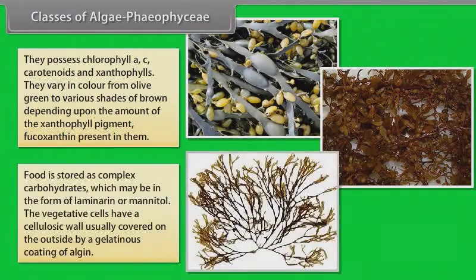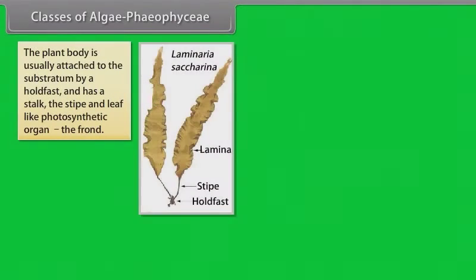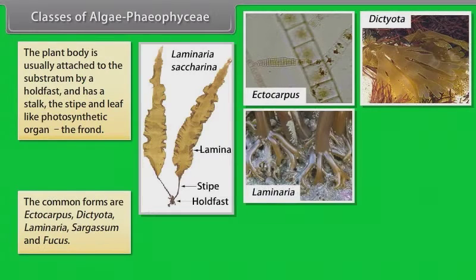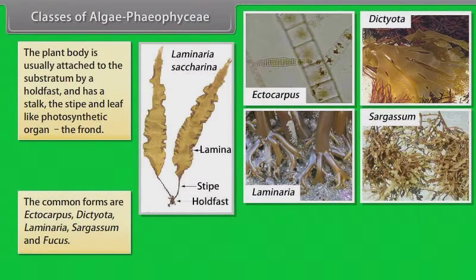Food is stored as complex carbohydrates which may be in the form of laminarin or mannitol. The vegetative cells have a cellulosic wall usually covered on the outside by a gelatinous coating of algin. The plant body is usually attached to the substratum by a holdfast and has a stalk, the stipe, and leaf-like photosynthetic organ, the frond. The common forms are Ectocarpus, Dictyota, Laminaria, Sargassum and Fucus.